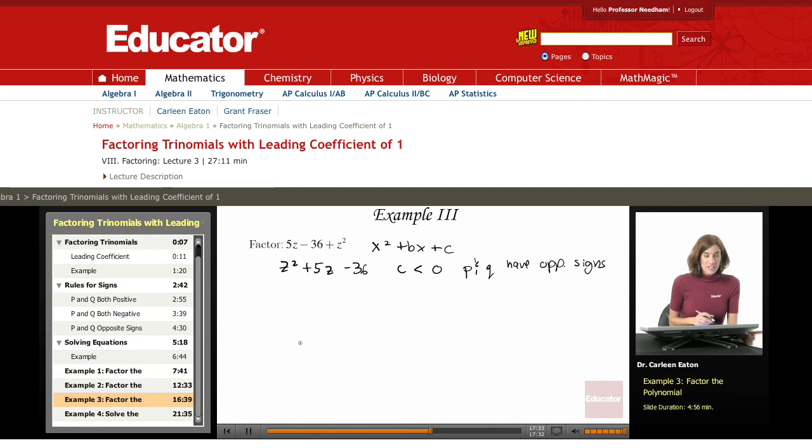Okay, remember, figure out the signs, then determine what b and c are. b is equal to 5, and c is equal to negative 36.